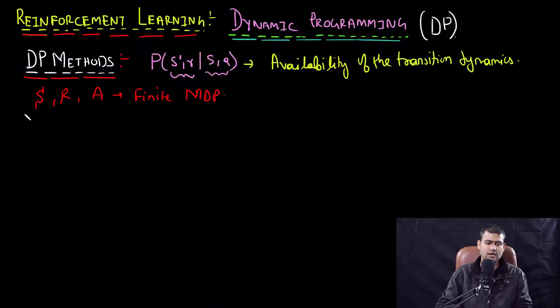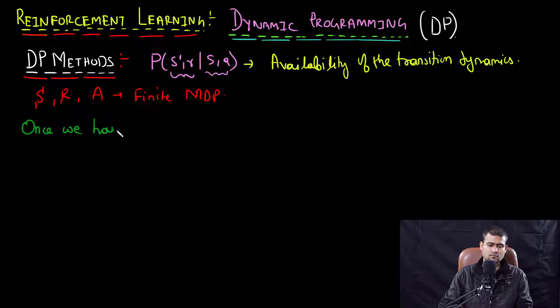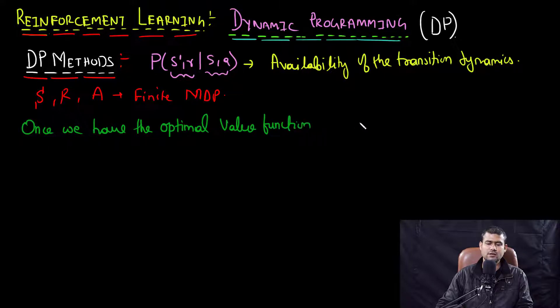Value functions are used to organize and structure the search over the policy space — to select or search for good policies, or perhaps the optimal policy. As we discussed previously, once we obtain the optimal value functions, we can compute the optimal policies. These can be either the state value function or the state-action value function.